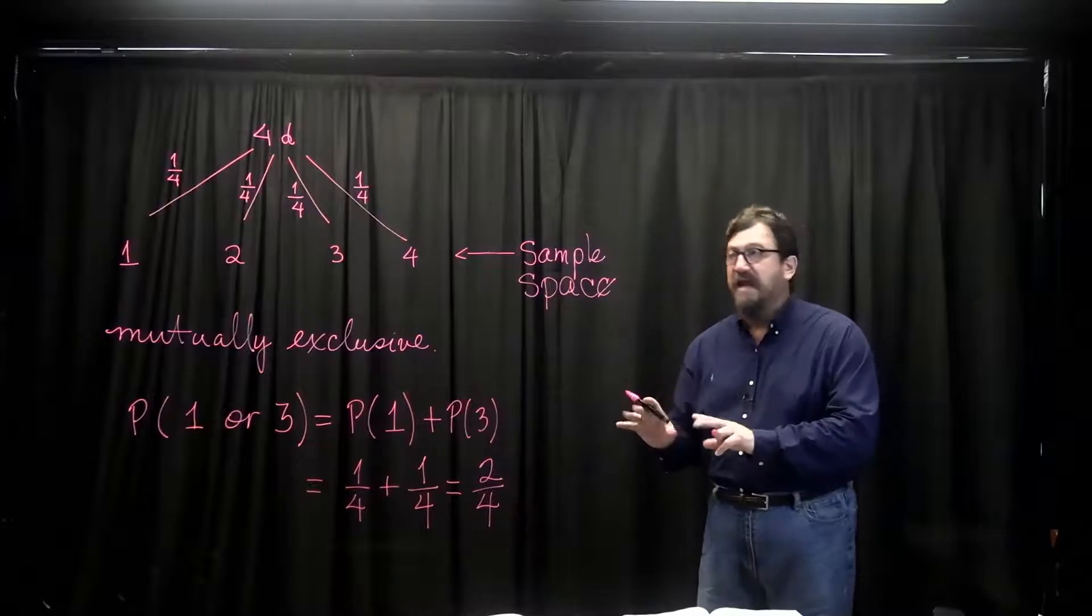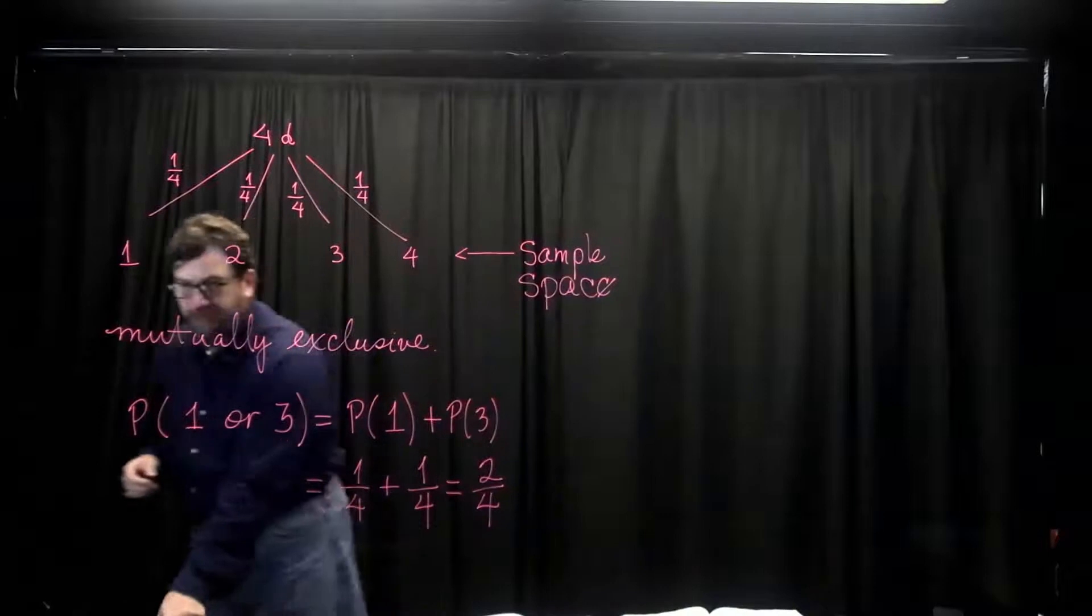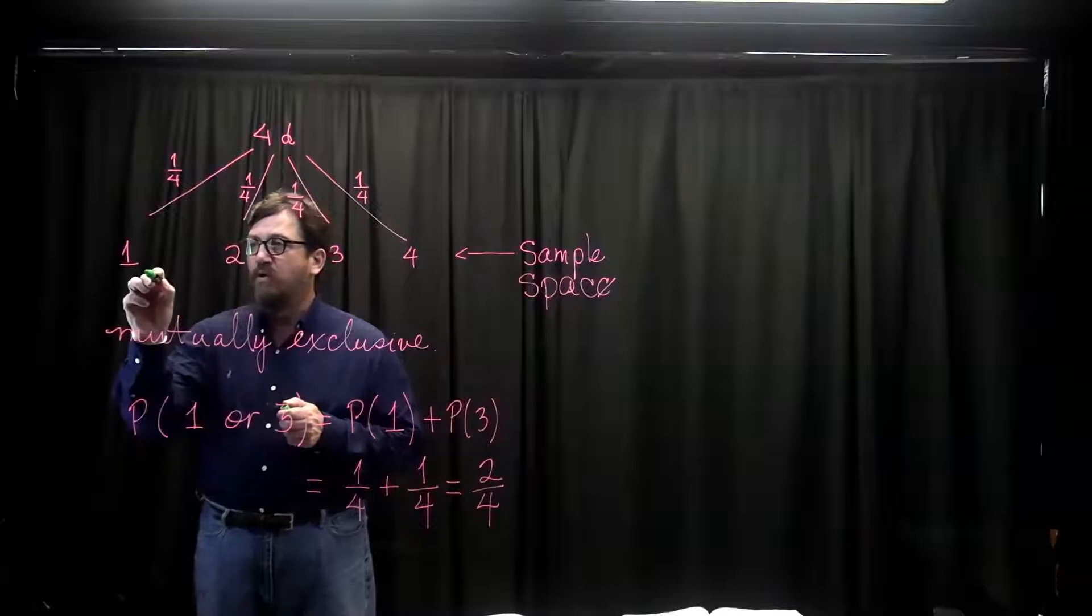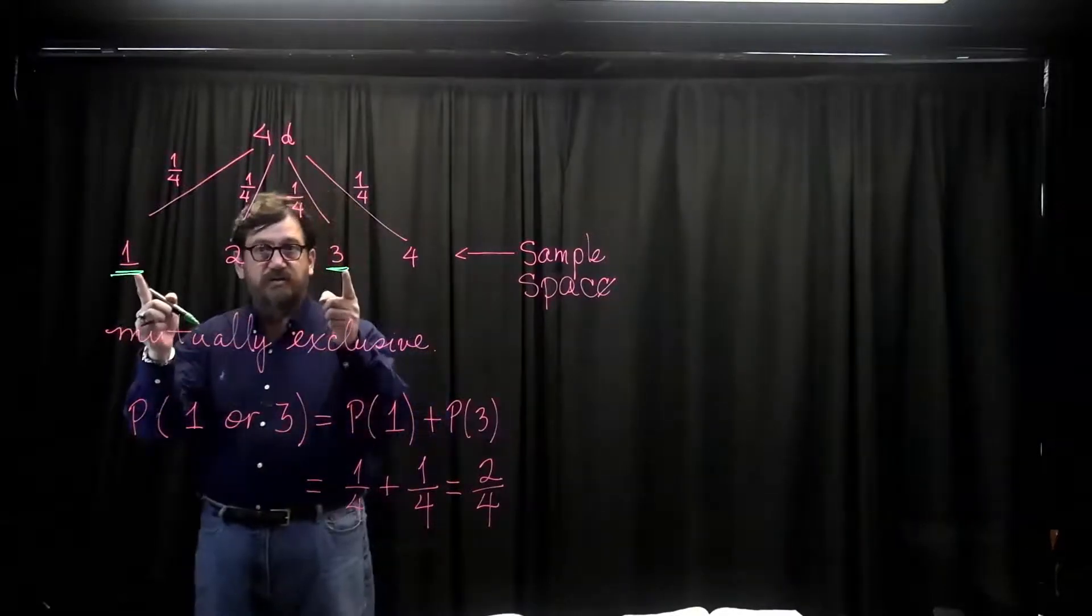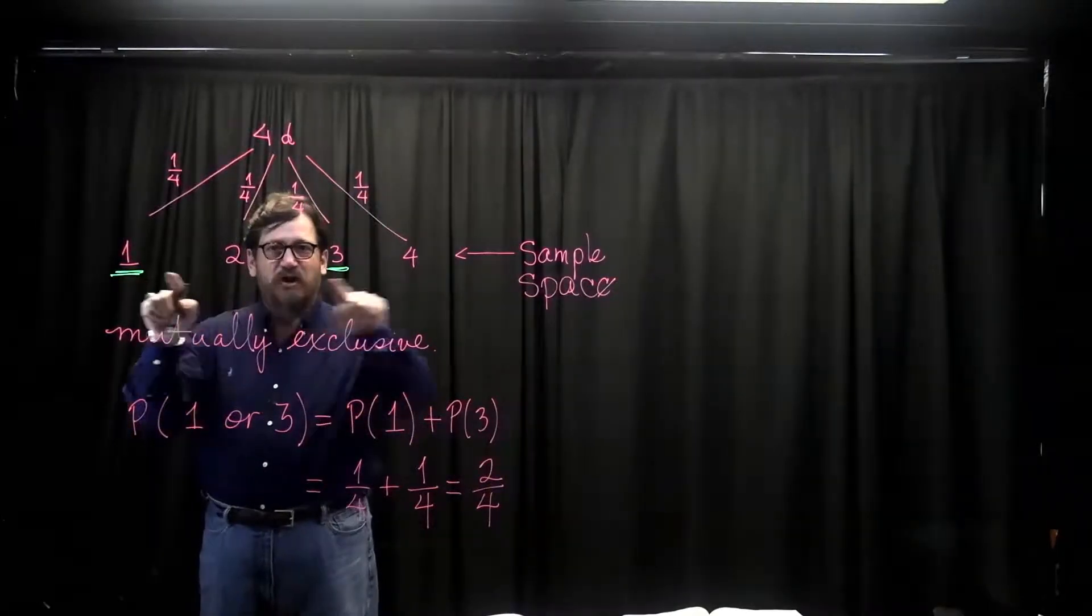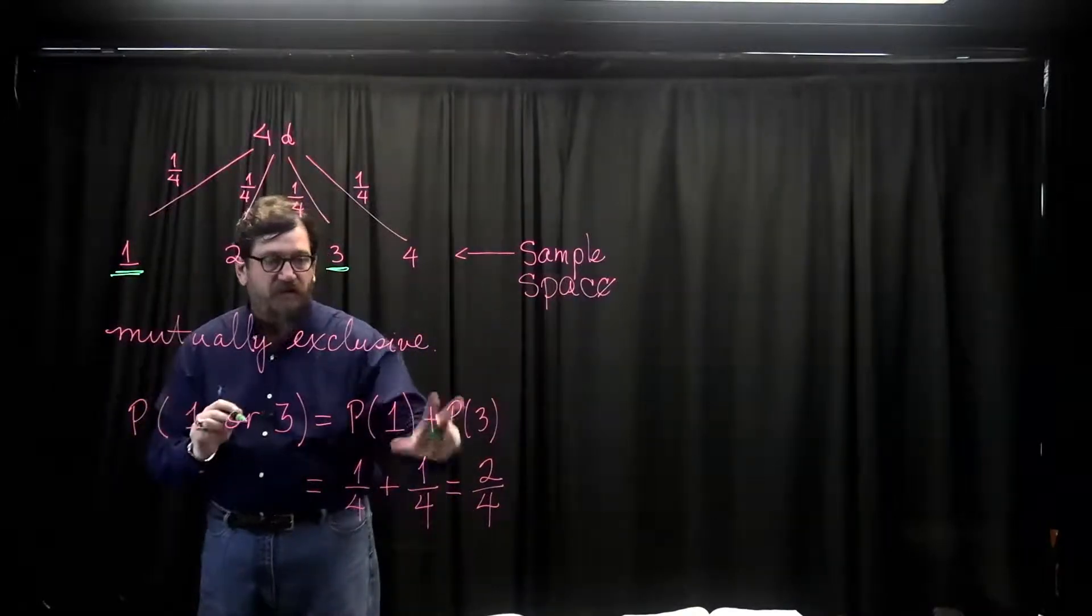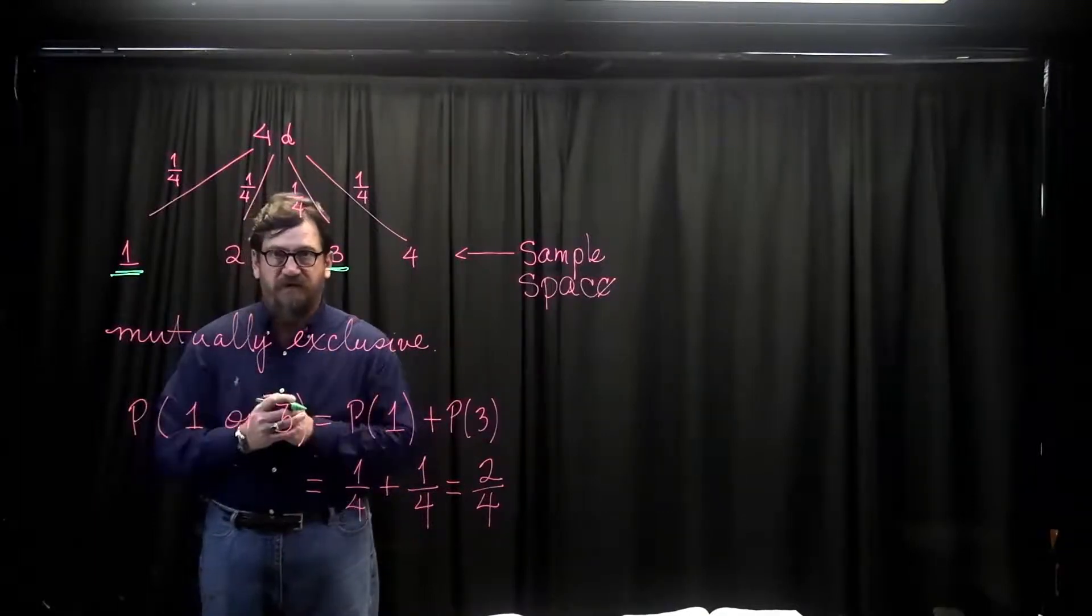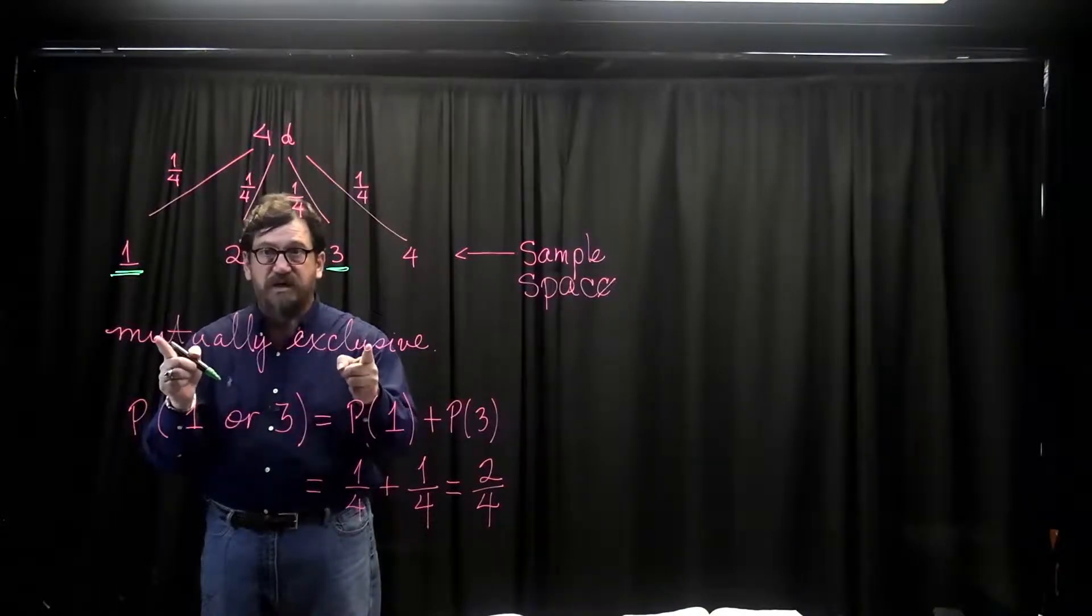We could have gotten that answer by simply looking at the table and asking ourselves, if I'm looking for a 1 or a 3, I see a 1 here, I see a 3 here, so there's two desirable outcomes, this two right here, for a total sample space of four, which gives me my denominator. So my arithmetic, saying turn ORs into plus signs makes perfect sense. But it does because of this idea of mutually exclusive events.